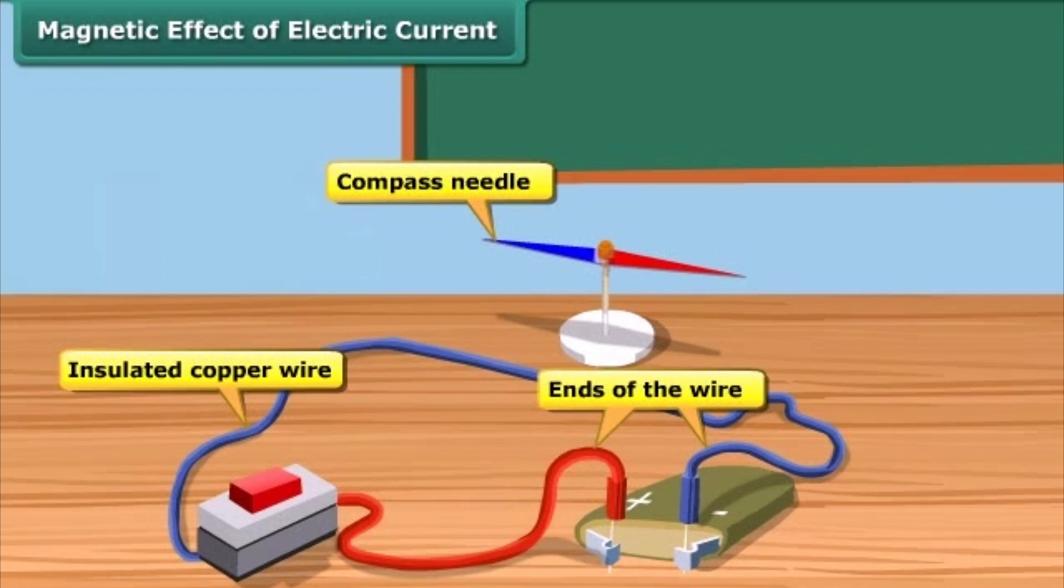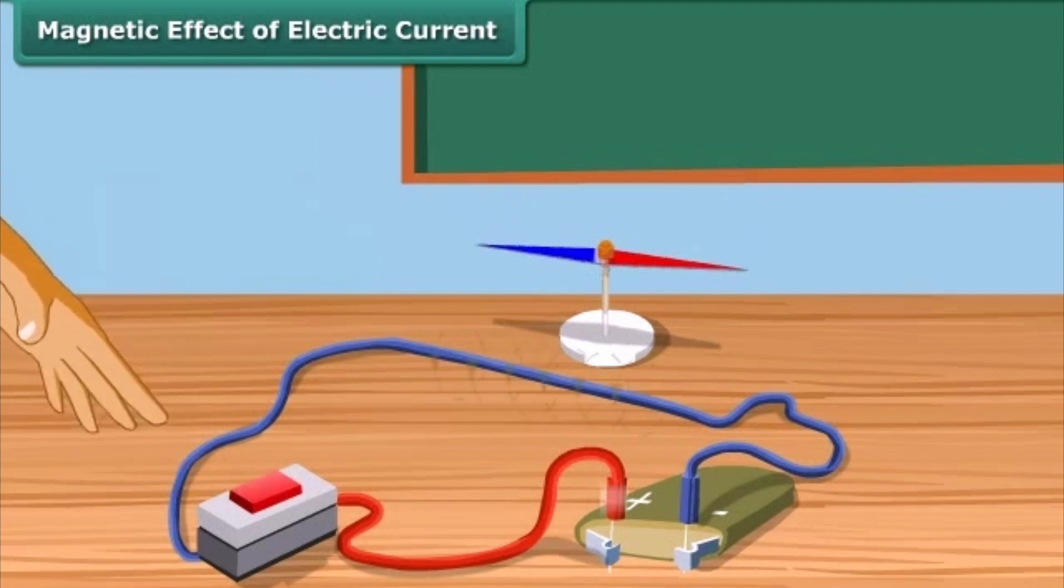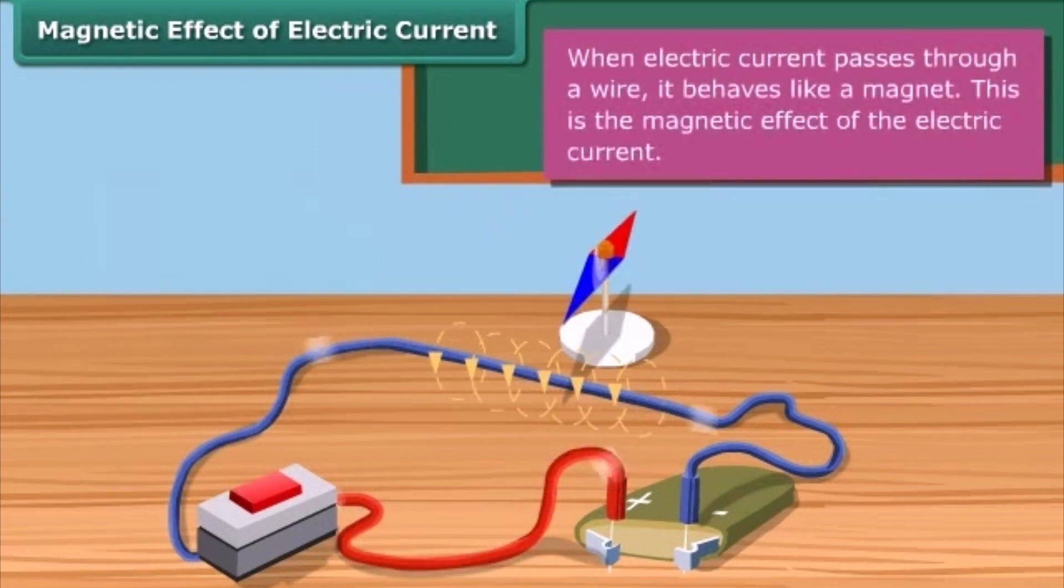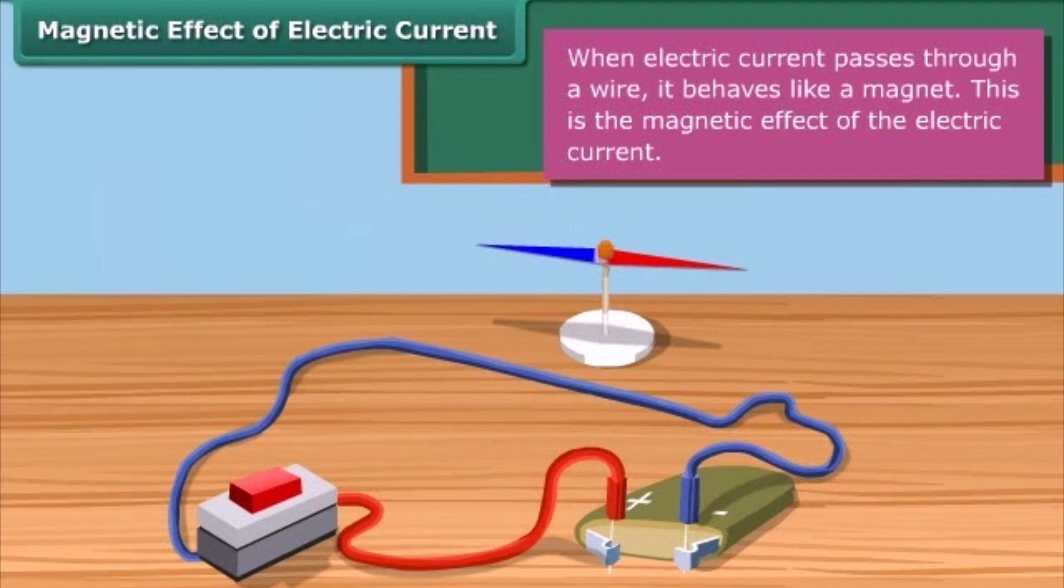When no current is flowing in the wire, the magnetic needle is parallel to the wire and points in the usual north-south direction. The needle gets deflected from its north-south position when current is passed through the wire. When electric current is switched off, the needle returns to its original position. This shows that an electric current produces a magnetic field around it.